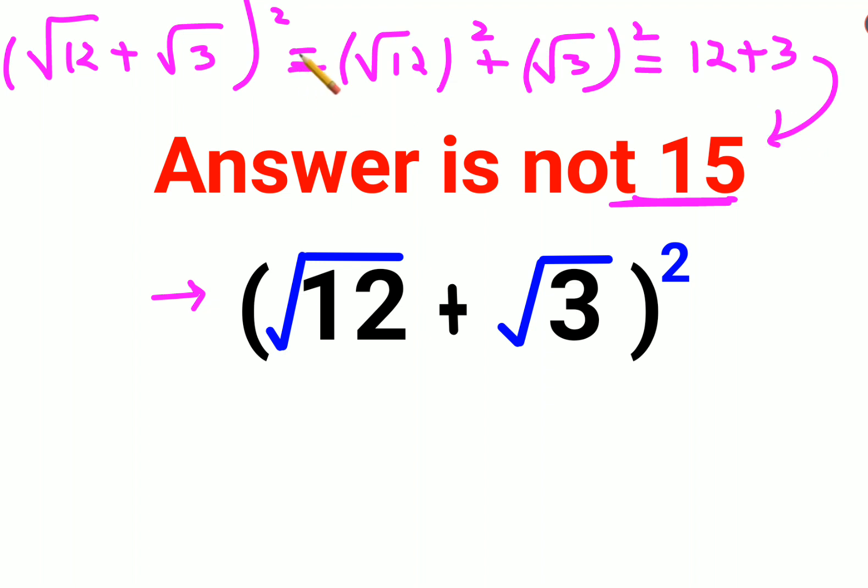But this is not equal to (√12)² + (√3)². Please understand this is in the format of (a + b)², whose expansion is a² + 2ab + b².